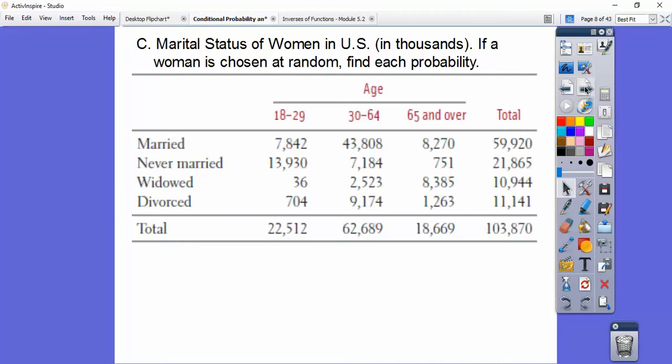Here's another one. Marital status of women in the U.S. in thousands. If a woman is chosen randomly, find each probability. So what's the probability that she's married given that she is young? Well, looking at this chart, I'm considering this young. So we're only looking in this column. Here's my total right there. So what's the probability she's married given that she is young? So we're in this part right here. So it's going to be this number over this number. And so when we do that, we get about 348 thousandths. 0.348.